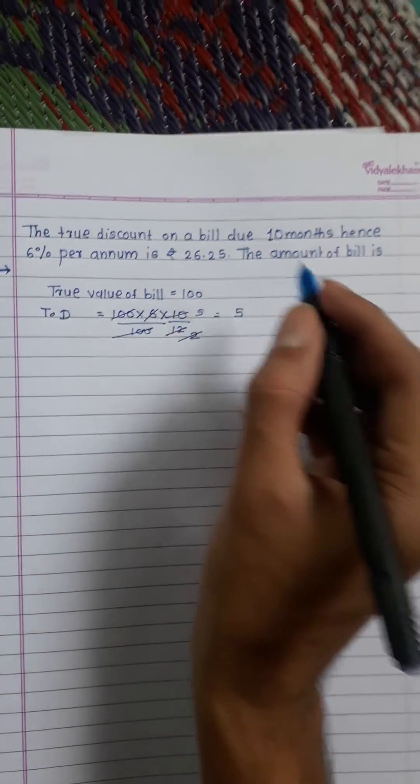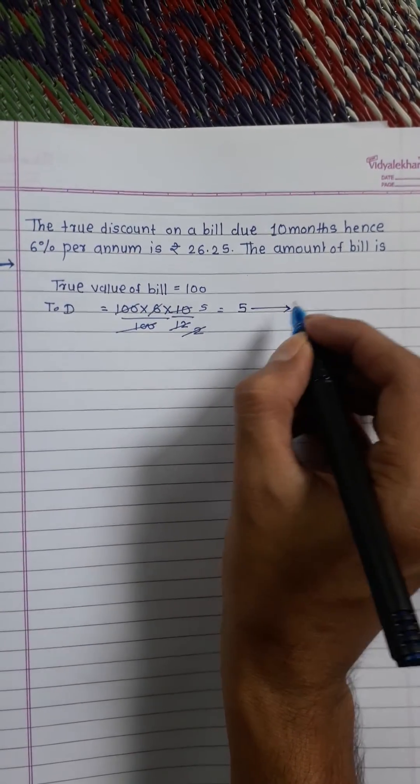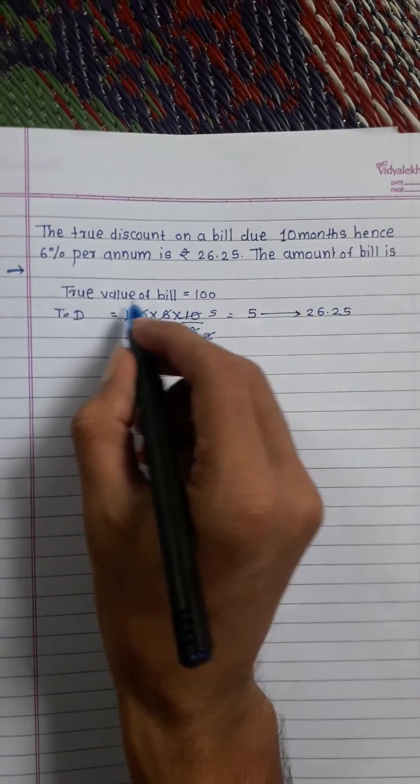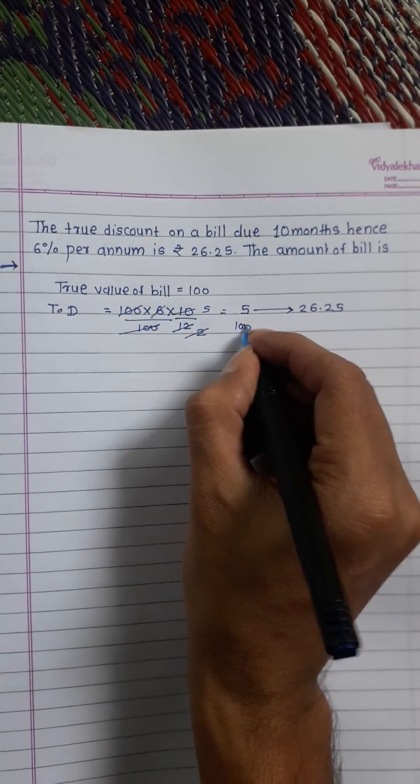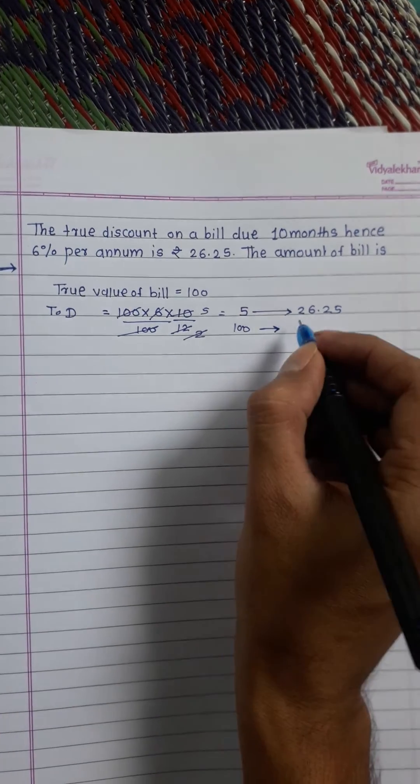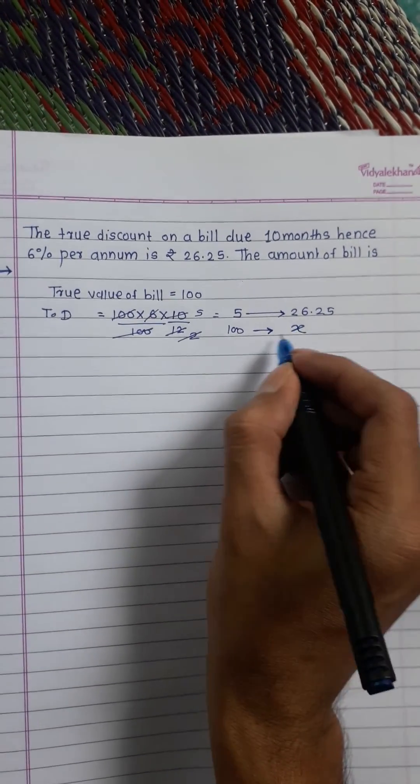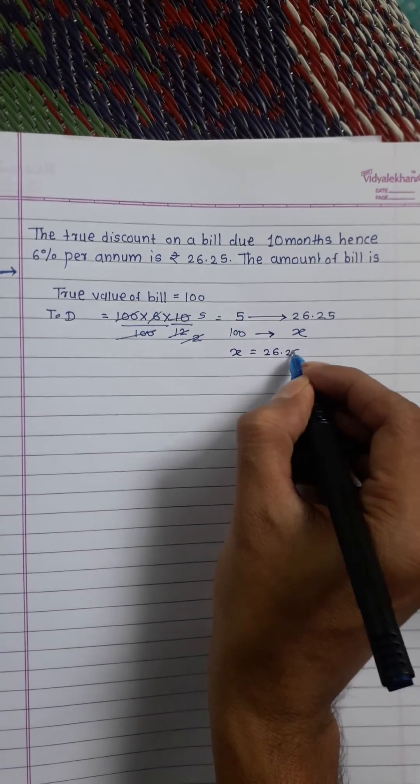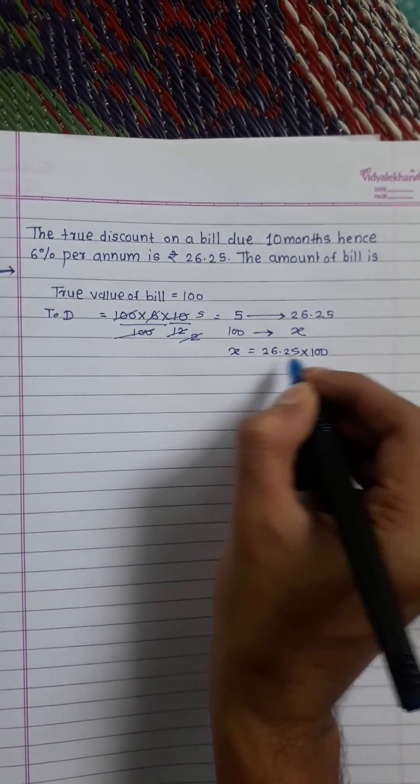Value of 5 units is given 26.25 and the value of 100 units will be x. This is x is equal to 26.25 multiplied by 100 divided by 5. We will get 525. This is the true value.